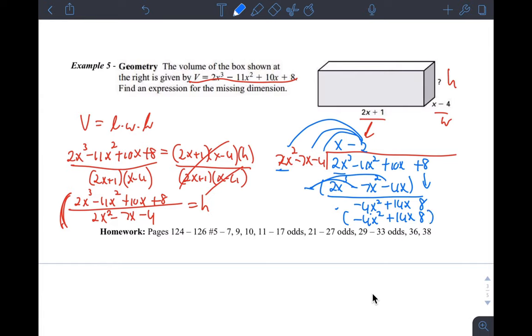And now I'm just subtracting all of that. But you'll see that everything cancels out. So the remainder is 0. So that tells me that this is h. So h equals x minus 2 since there's no remainder. So h is x minus 2. I hope that helped, guys. Thank you. Bye.